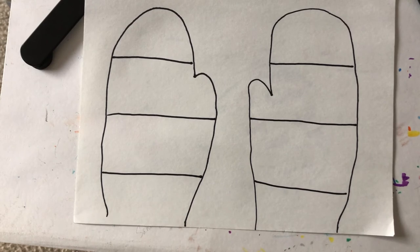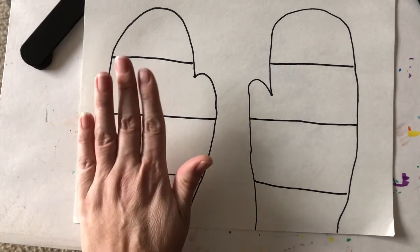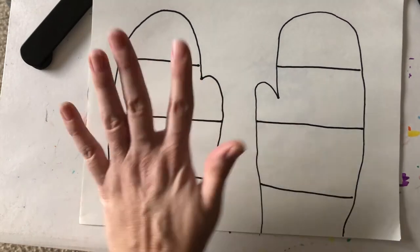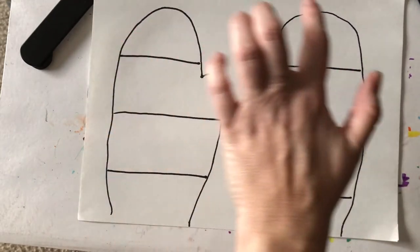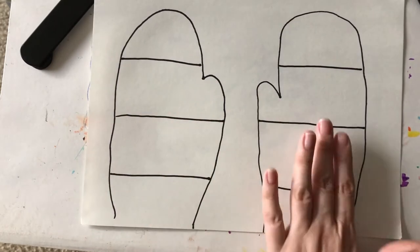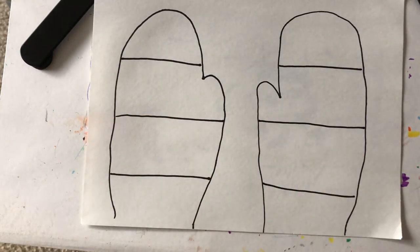Okay so our two mittens are going to match each other. That means that we're going to have the same design on this side as we do on this side. The same colors that are here would be here. We're going to try to make them look alike and we're going to try to create a little pattern.